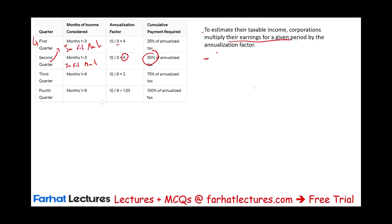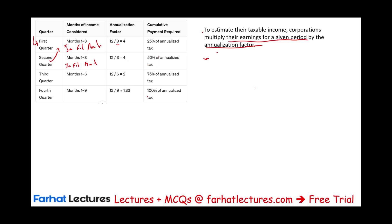To estimate the taxable income, the corporation multiplies their earnings in a given period by the annualization factor. Here are the factors: for the first quarter, multiply by 4; for the second quarter (based on first quarter data), multiply by 4; for the third quarter, you're looking at half a year's data, so you multiply by 2; for the fourth quarter, you use nine months of data multiplied by 12/9, or approximately 1.33.